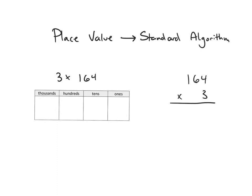Starting with the place value chart, in the first step I'm going to be looking at my 1s, 10s, and 100s place and representing those in disks on the place value chart. I'm going to use colored disks this time just to show what's actually happening when I am doing the multiplication each step.